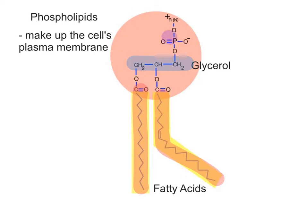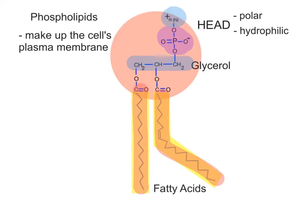A negatively charged phosphate group is attached to the third carbon, which connects to a small, positively charged nitrogen-containing group. This region, having both negative and positive charges, forms the polar head of the phospholipid, which is hydrophilic and can form hydrogen bonds with water molecules.